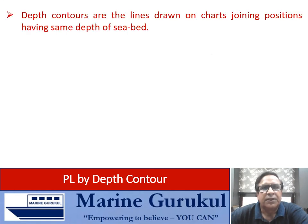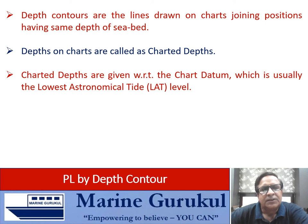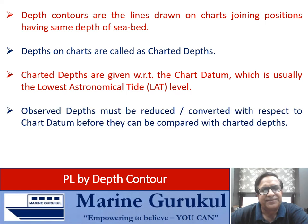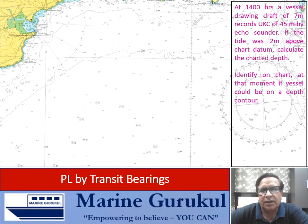PL by depth contour: depth contours are lines drawn on a chart joining positions having the same depth of seabed. Depths on chart are called charted depths and are given with respect to chart datum — usually the lowest astronomical tide level. Observed depths must be reduced to chart datum before comparing with charted depths; a tidal correction with respect to chart datum must be applied. Example: at 1400 hours a vessel with 7 m draft records UKC of 45 m by echo sounder; tide is 2 m above chart datum — calculate charted depth.